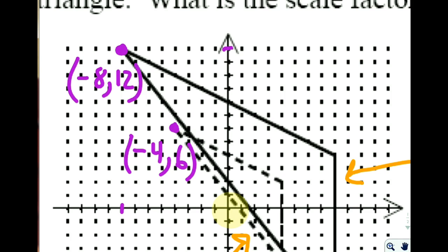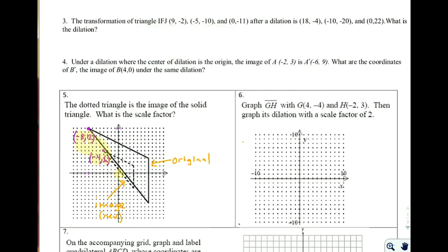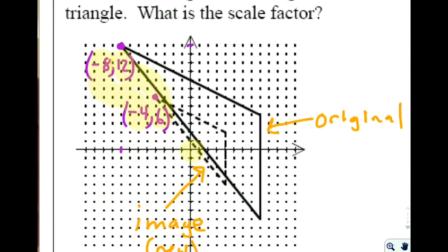Now, comparing what our x-coordinates are in both of these, you can see that we went from negative eight in the original to a negative four in the new image. We also see that we went from a twelve to a six. So it appears, based on that, that our scale factor is one-half. If this is where we started, and this is the image, we had to multiply these numbers times one-half to get down to here. So scale factor appears to be one-half.